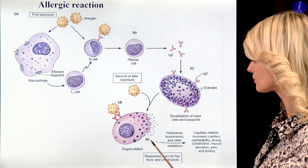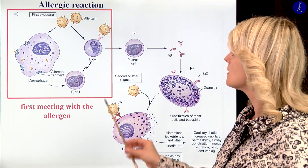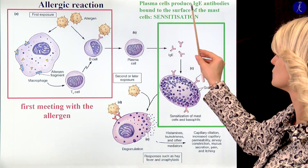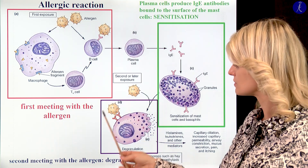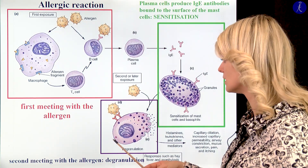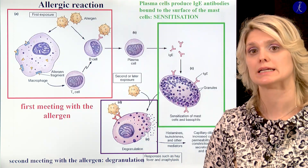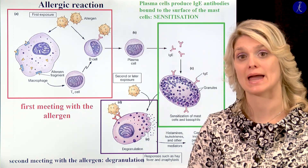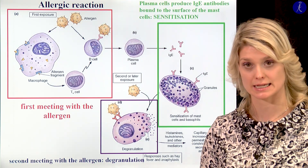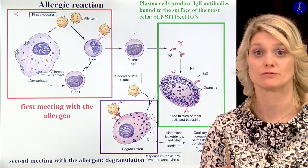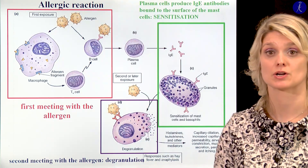What happens with the mast cells? So first, when we meet first with the allergen, the B cells and plasma cells will produce immunoglobulins. These immunoglobulins will attach to the surface of the mast cells. In the case of the second meeting with the allergen, these granules will be degranulated. And this will be the acute allergic reaction, where we have redness, pain, and capillary dilatation. That is what we can see in the skin. That's why we have no allergic reaction when we meet first with something — for example, a cream or perfume. But after, if we use that more, we have an allergic reaction.